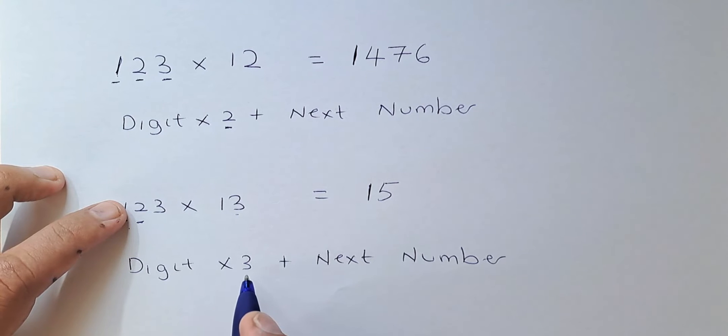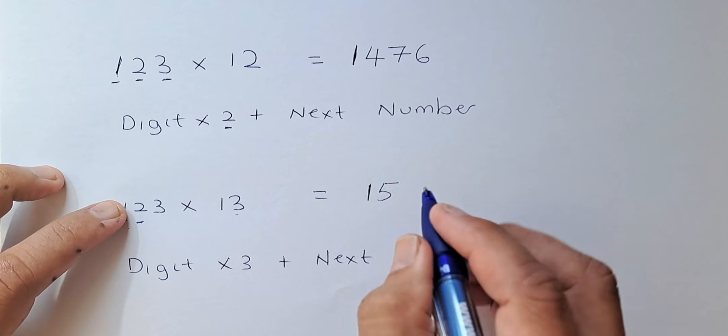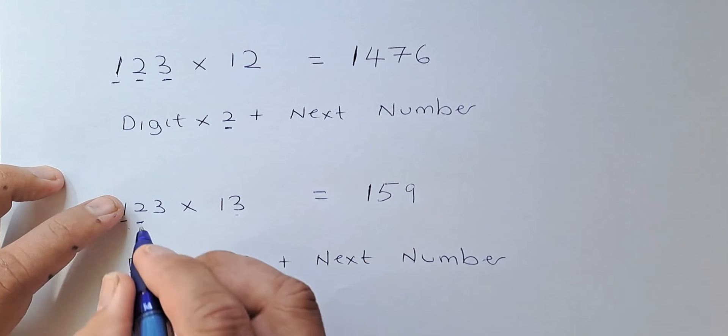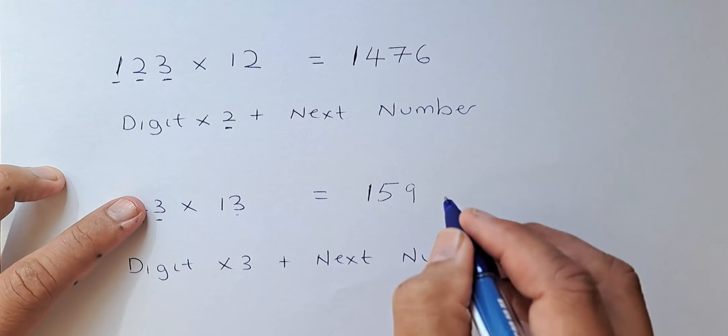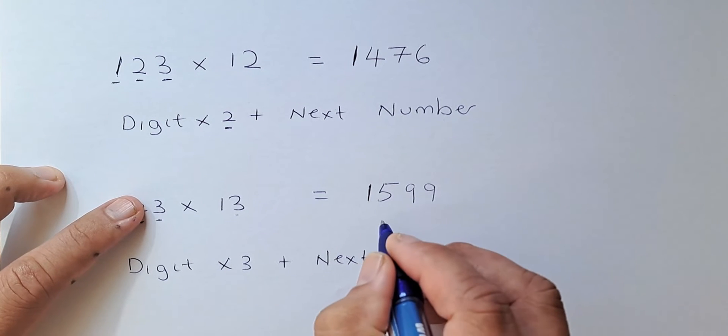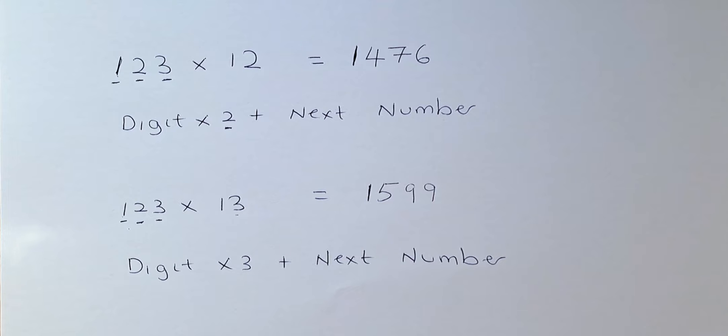2 times 3 is going to be 6 plus 3 is going to be 9. And last but not least, 3 multiplied by 3 is going to be 9. That is how you multiply by 13.